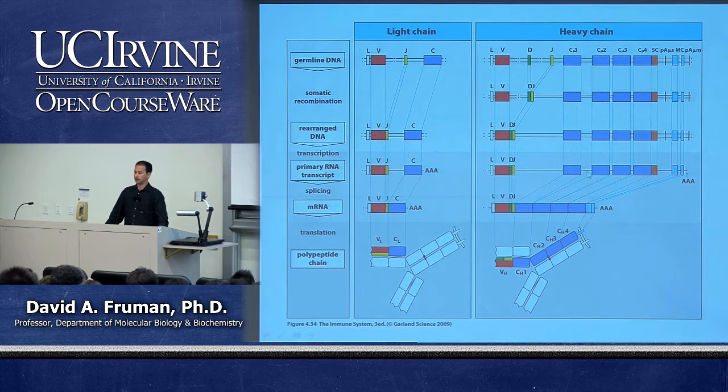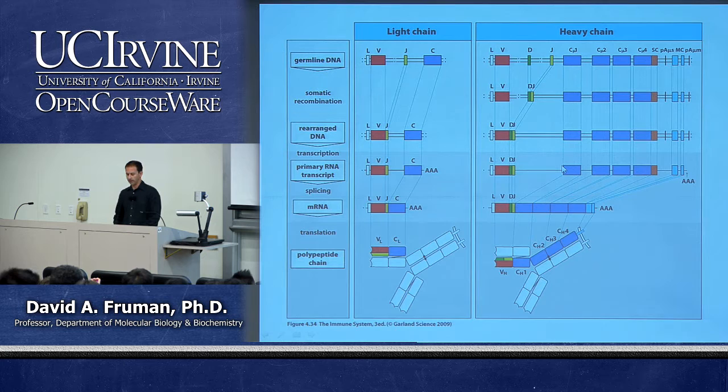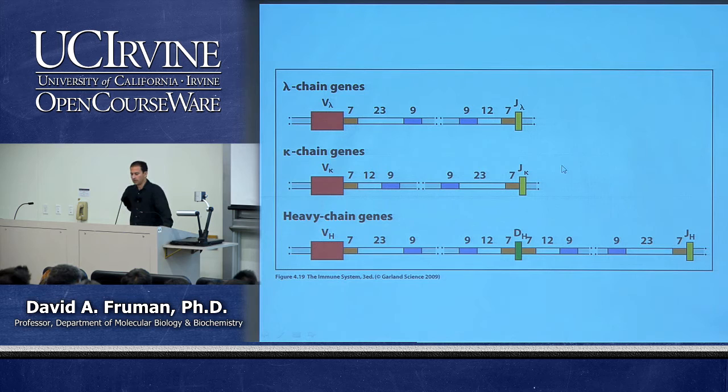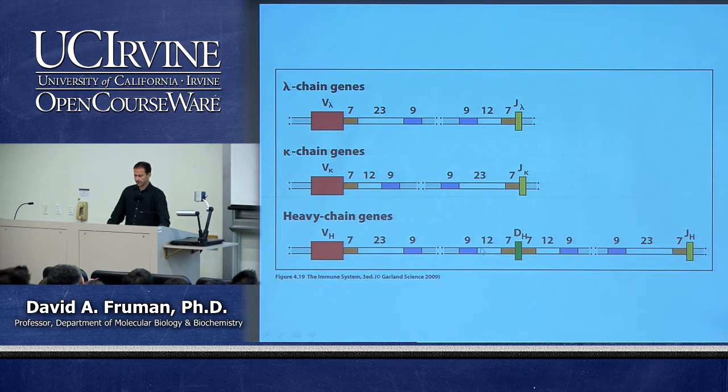Keep in mind how the protein corresponds to the different gene segments and to different exons. Now let's talk about how this process actually happens — this fantastic process of DNA rearrangement and its mechanism. Every single V segment, J segment, and D segment is flanked by what's known as a recombination signal sequence, or RSS.